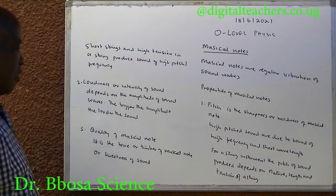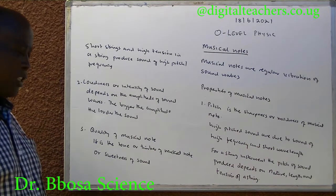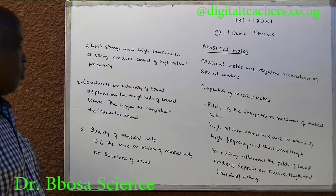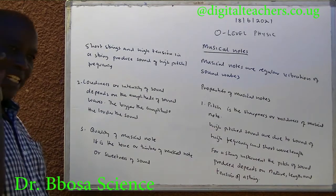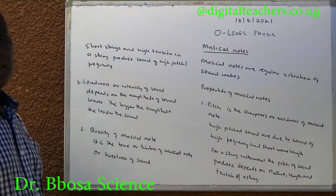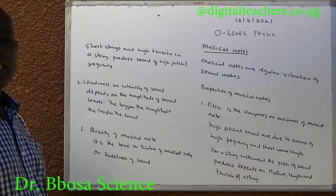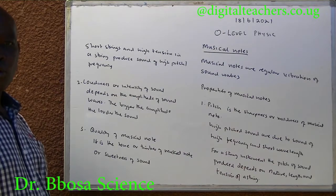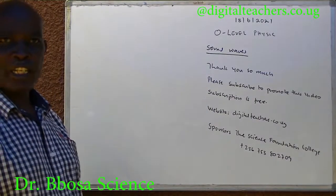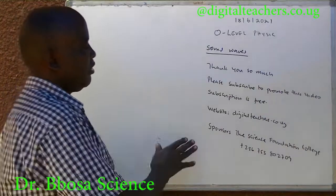The third quality of musical notes is the quality or timbre — the tone or sweetness of sound. Sometimes the sound is sweet, and sometimes the sound is coarse.